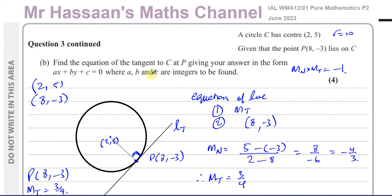And there we have the answer to question number 3, part b, which concludes this circles question. It's a pretty straightforward, textbook-style question. Other questions from this paper and from the circles topic in P2 can be found in the playlists shown at the end of the video. You can subscribe to my channel by clicking the link, and there's a video showing how to use my channel effectively for Cambridge A-levels, IGCSEs, P3, P4, M1, S1, and more. Thank you for watching and see you soon.